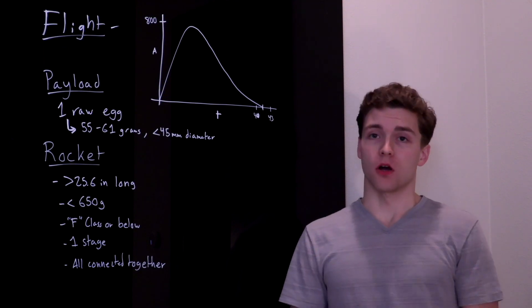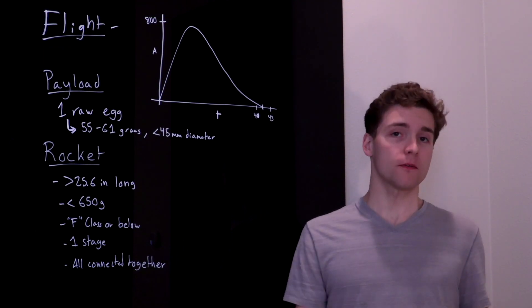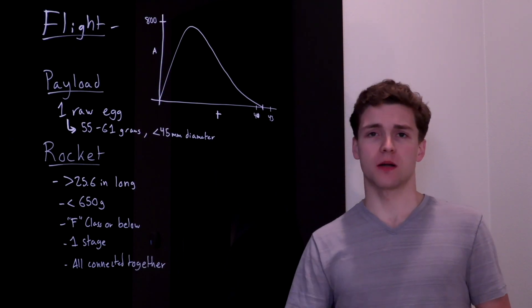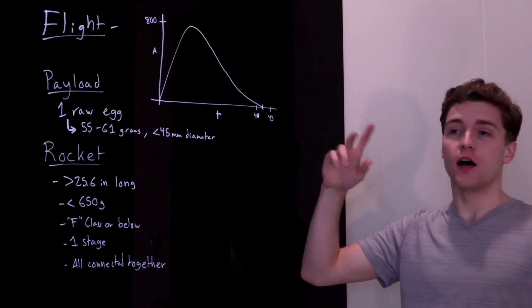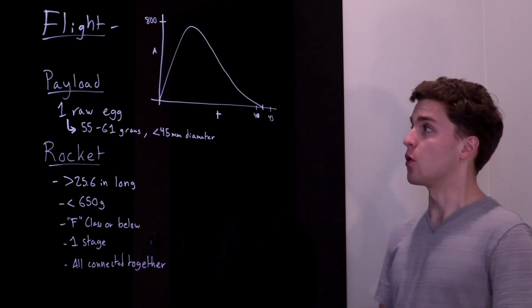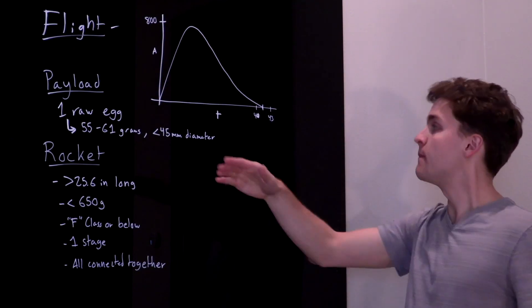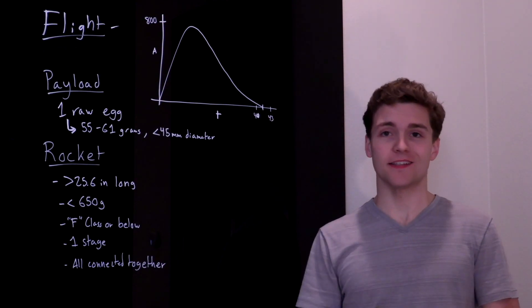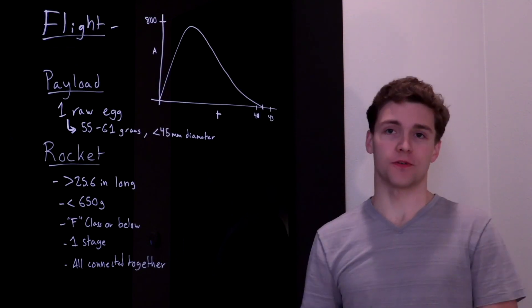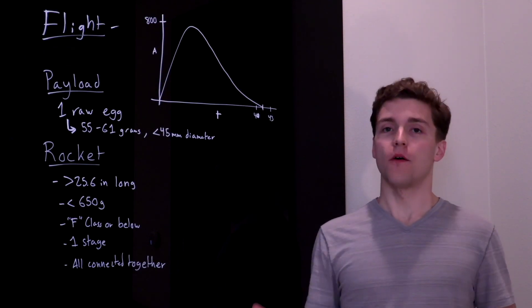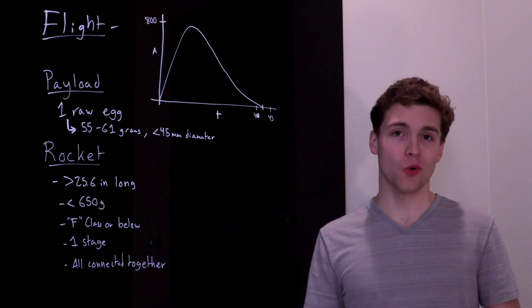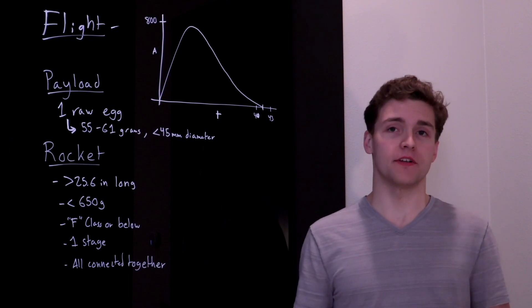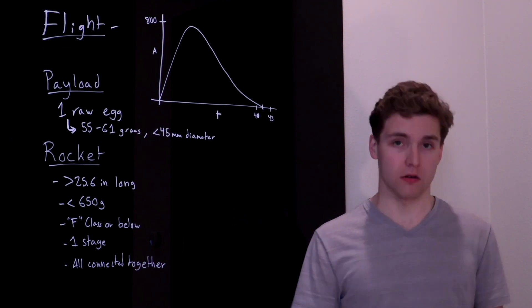The primary objective of TARC is to get the lowest flight score possible. A perfect score is zero — it's a lot like golf, you want the fewest number of strokes possible. Points are added two ways to our flight score. First, through how high we fly. This year's altitude goal is 800 feet, and every foot that we're off that goal, one point is added to our flight score. So if we fly 810 feet, 10 points are added, and if we fly 790 feet, 10 points are also added.